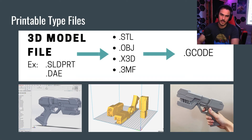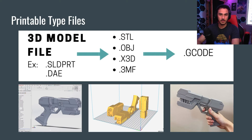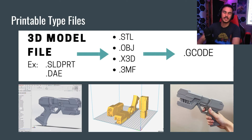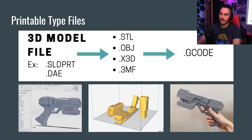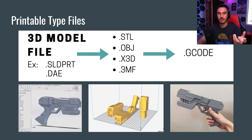Printable file types. You can't just take a normal 3D model file and shove it into a 3D printer on a USB drive — it doesn't work that way. What you have to do is go through a series of steps to take that model and turn it into code that the machine can read.